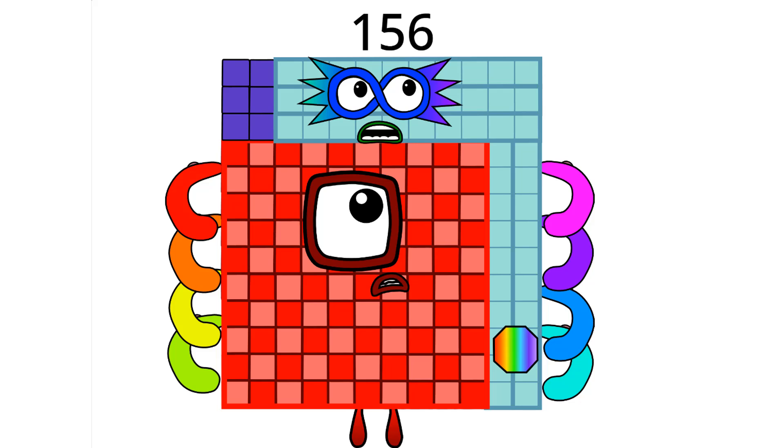12 by 13. 13 by 12. Duo-decuple unlucky. Not a perfect square. Super rectangle. 12 factors. Even number. 120 plus 36. 130 plus 26. 10 teams 13 plus 12 teams 13. 100, 50, and 6 ones.